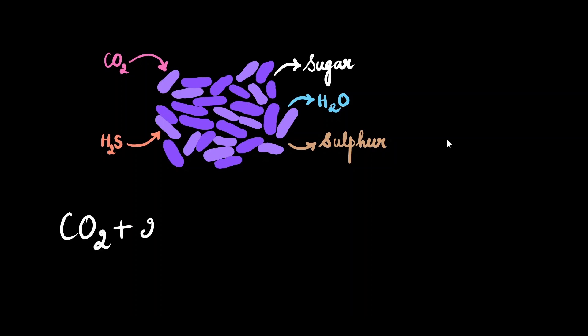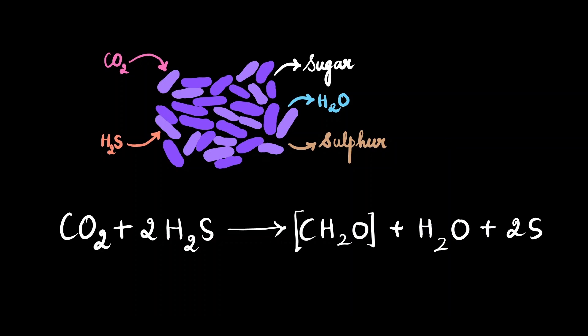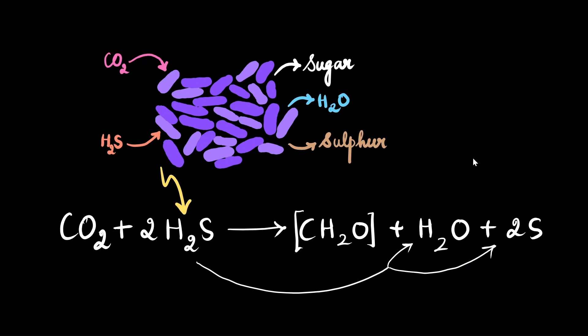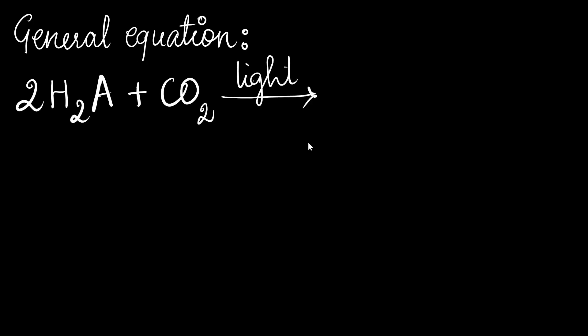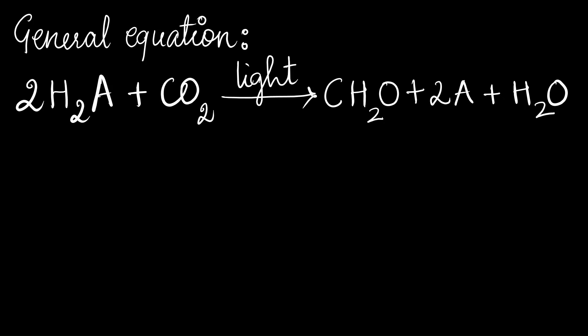Photosynthesis for these bacteria can be described as: carbon dioxide plus hydrogen sulfide gives sugar, water, and sulfur gas. In these bacteria, light breaks hydrogen sulfide into hydrogen and sulfur; the hydrogen combines with carbon dioxide to form sugars. The hydrogen sulfide is oxidized and the carbon dioxide is reduced to sugar. Overall, a general photosynthetic equation can be written as: H₂A plus carbon dioxide, in the presence of light, gives sugar, A, and water.